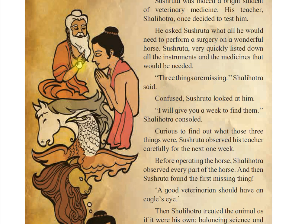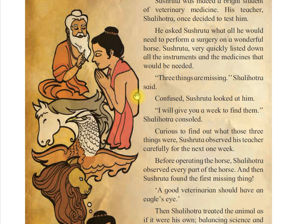Sushruta very quickly listed down all the instruments and medicines that would be needed. But his teacher said that three things are missing before doing a surgery. Sushruta was confused about what extra information his teacher wanted.